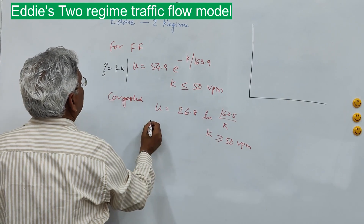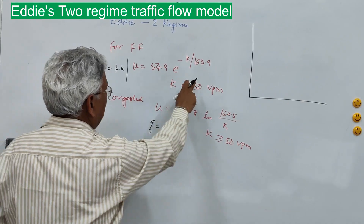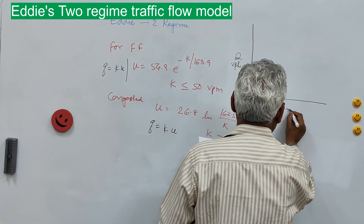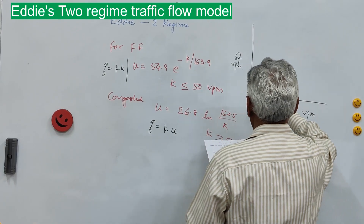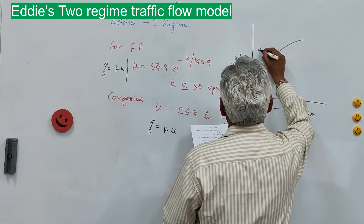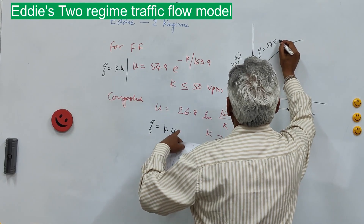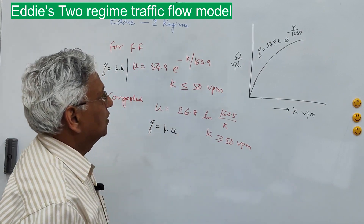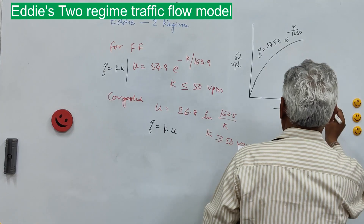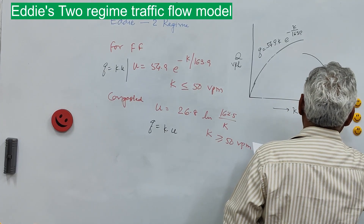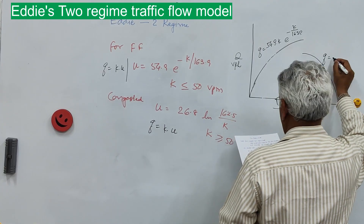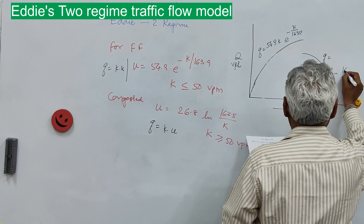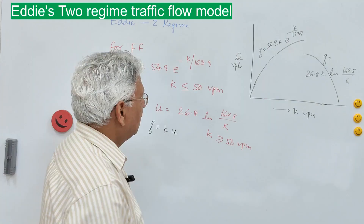If you plot the q-k relationship using these equations — since q = k · u — and this is the flow in vehicles per hour and this is the density in vehicles per mile, then for the uncongested part: q = 54.9 · k · e^(−k / 163.9), and for the congested part: q = 26.8 · k · ln(162.5 / k).